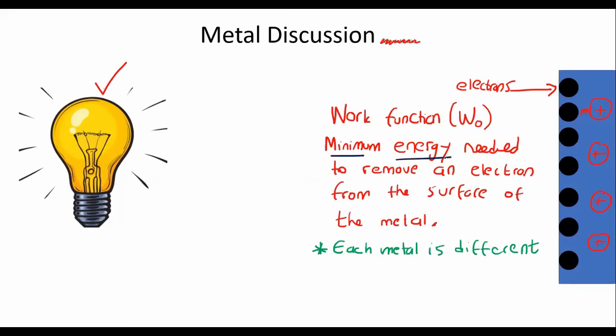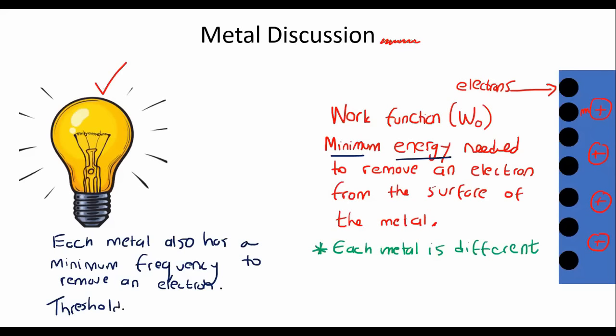Each metal also has a minimum frequency to remove an electron. This frequency is called the threshold frequency, f₀.